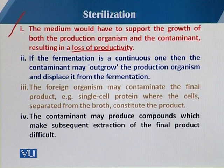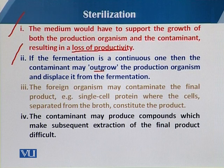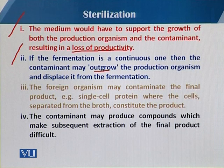The second consequence is that if the fermentation process is contaminated, especially when there is a continuous process, outgrowth of the contaminant happens, which slowly with the passage of time displaces our specific organism, which we call the production organism. So there is loss or displacement of the specific microorganism by the contaminants.